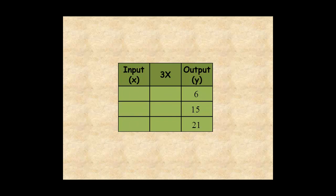If you have a table of outputs and a function rule, you can work backwards to find the inputs. In this example, if the output is found by multiplying by 3, then the input is found by dividing by 3.